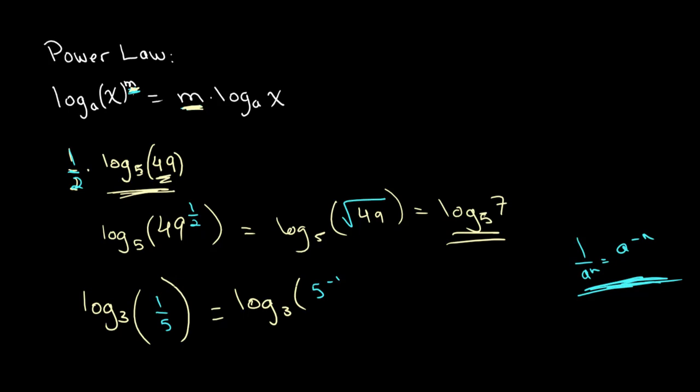Anyway, I'm saying anyway a lot. So this is equal to log base 3 of 5 to the power of negative 1. And using this power law, we know that we take the power of the thing or the number inside of our log, and we can bring that around. So we can rewrite this as negative log base 3 of 5.